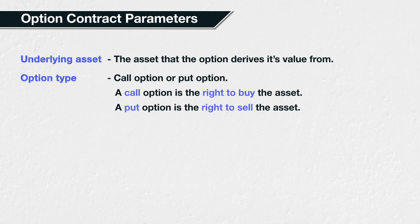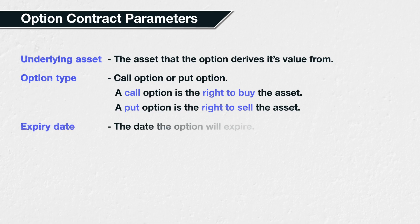The second parameter is the option type. The two types of options are call options and put options. A call option gives the buyer of the option the right to buy the asset at a given price, and a put option gives the buyer of the option the right to sell the asset at a given price. The third parameter is the expiry date — this is the date the option will expire and be exercised if it has any value.